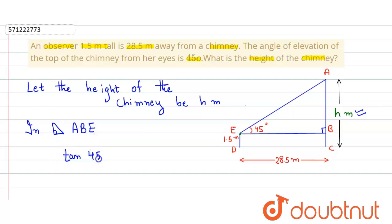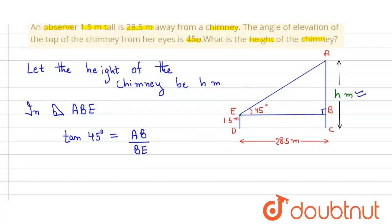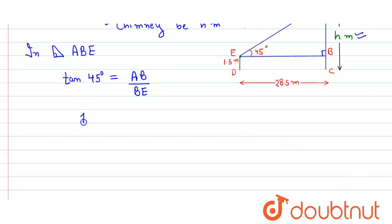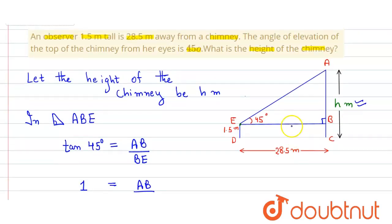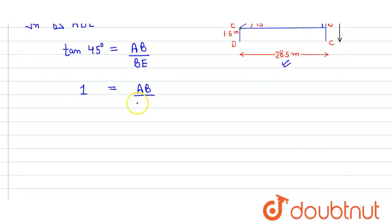We take tan 45 degree which is equal to perpendicular divided by base. Perpendicular is AB and base is BE. So tan 45 degree equals 1 equals AB divided by BE. The value of BE is 28.5 meter. So we get the value of AB is equal to 28.5 meter.